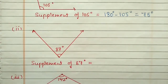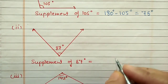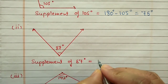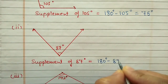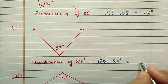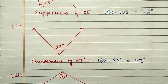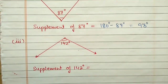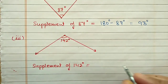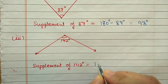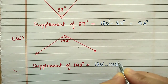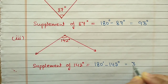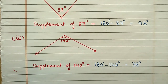Second part: 87 degrees. The supplement of 87 will be 180 minus 87, equal to 93 degrees. Third part: 142 degrees. The supplement of 142 will be 180 minus 142, equal to 38 degrees.